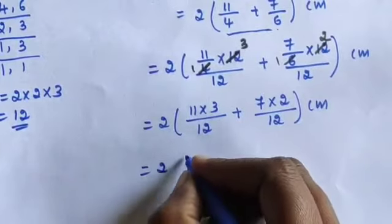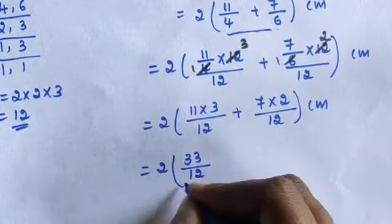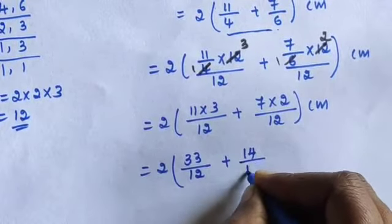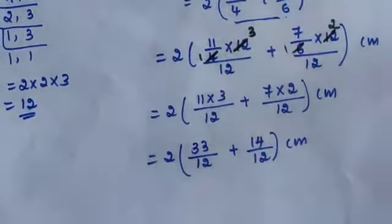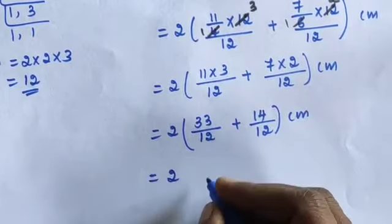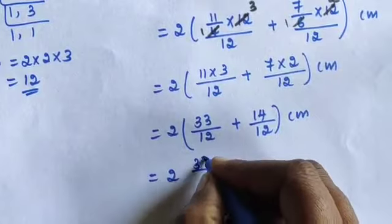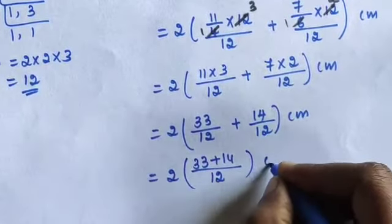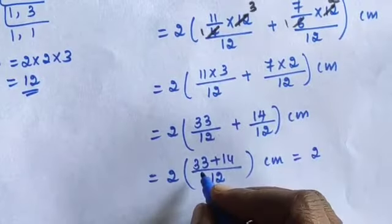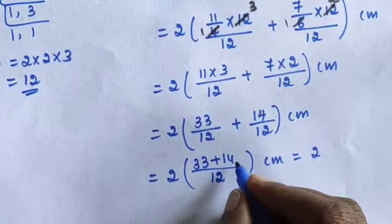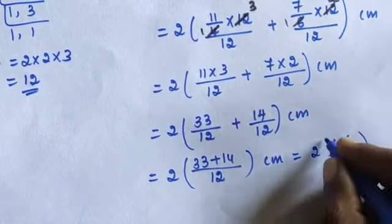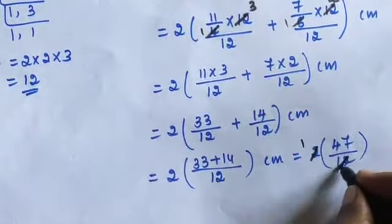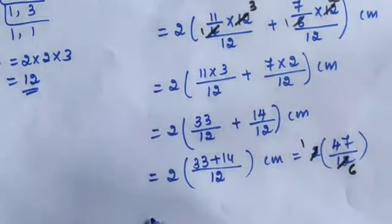Now the denominator is the same, so add the numerators: 33 + 14 = 47. So we have 2 × (47/12). That gives 94/12. Simplifying: 2 × 47/12 = 47/6. This is an improper fraction, so convert to mixed fraction.